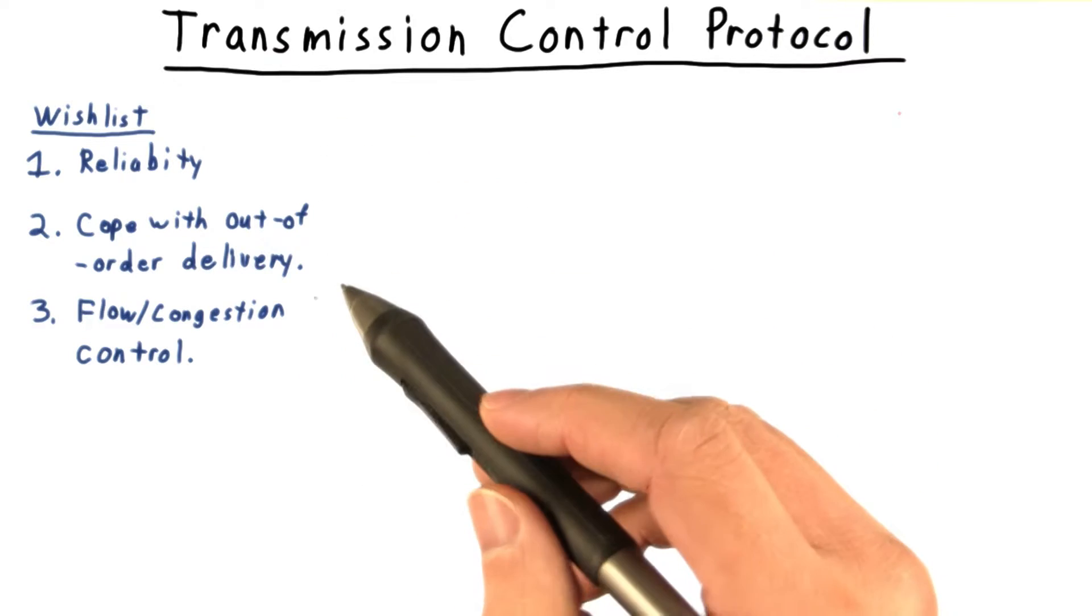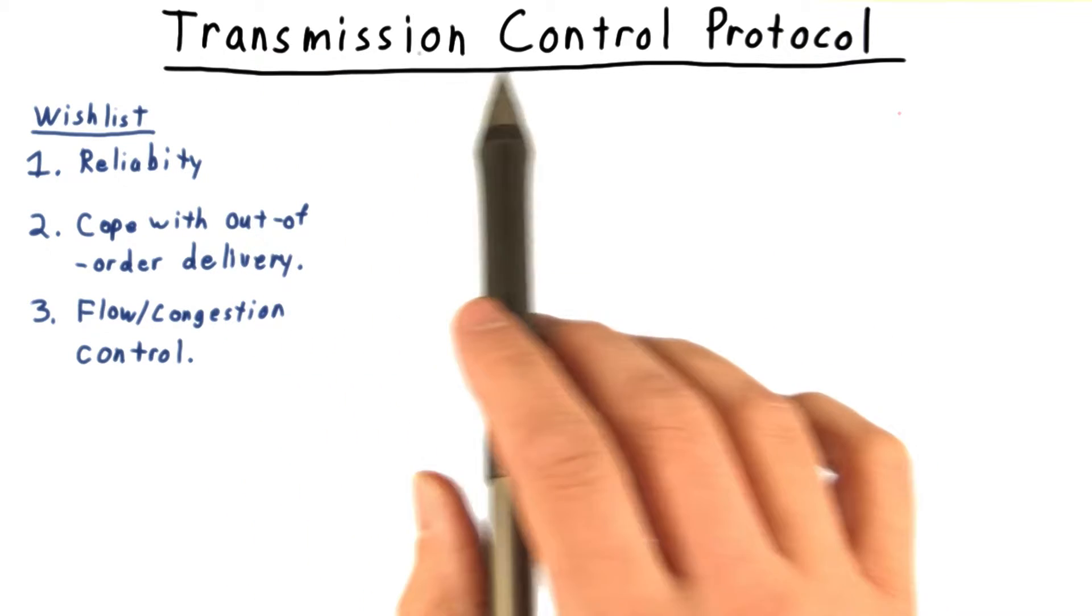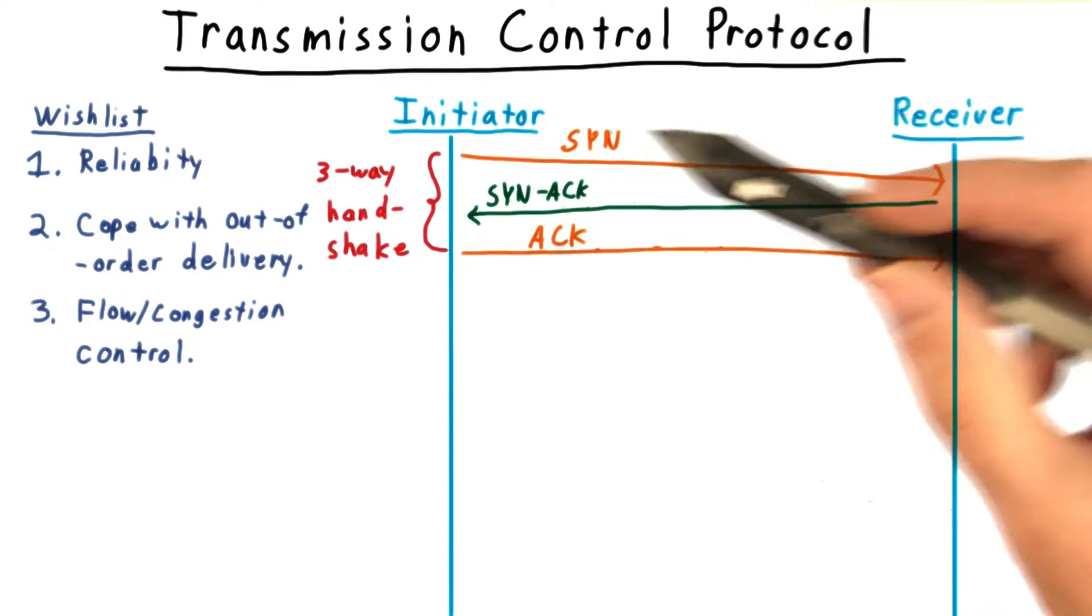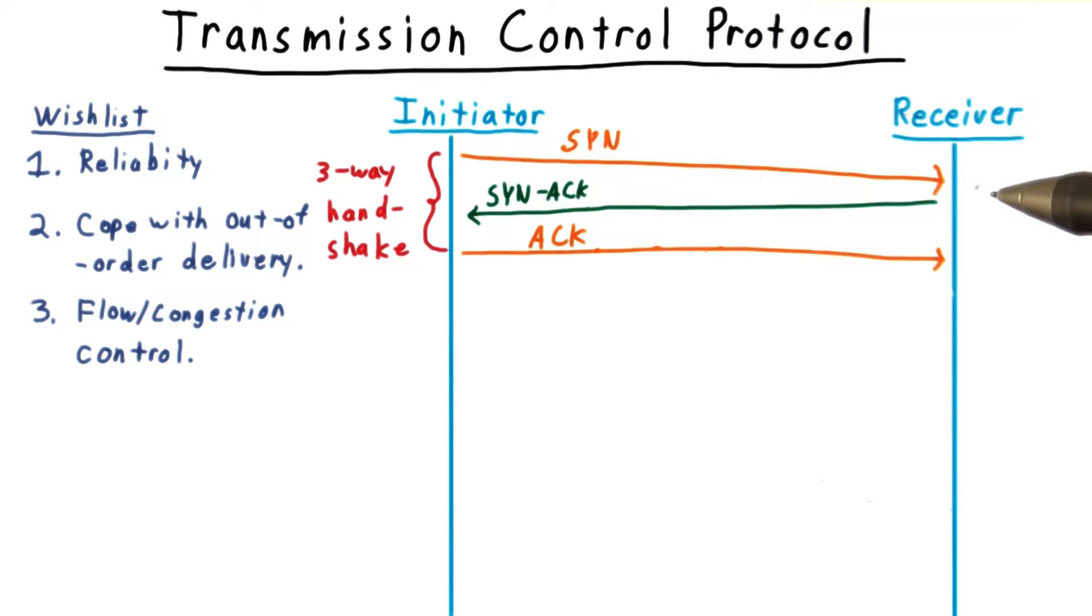All of this functionality is provided by the Transmission Control Protocol, or TCP, inside the transport layer. TCP doesn't just start off firing packets towards some destination without warning. The conversation begins and ends with a polite handshake to mark the beginning and end of an exchange.